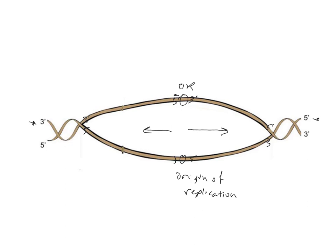Knowing the template strand directions allows us to determine what direction the new strands will move. For the top-left: template is 5' to 3' going right to left, so the new strand is 3' to 5' in that same direction. For the bottom-left: template is 3' to 5' going right to left, so the new strand is 5' to 3'. For the top-right: template is 3' to 5', so the new strand is 5' to 3' as it moves from the origin toward the replication fork. For the bottom-right: the new strand is 3' to 5'.